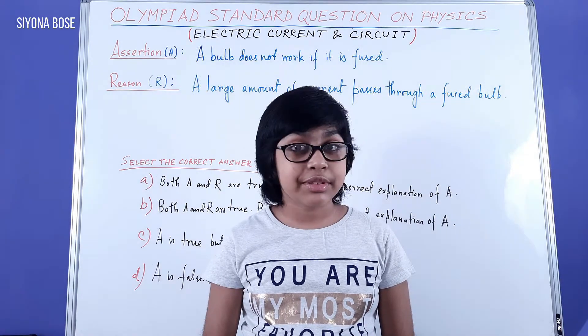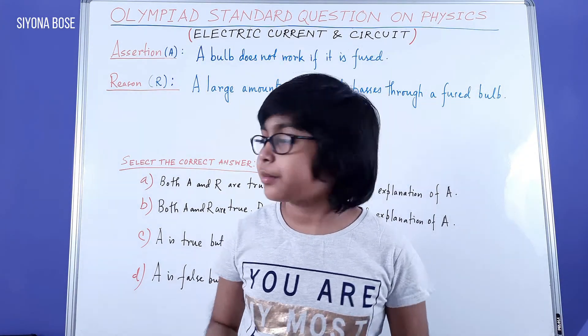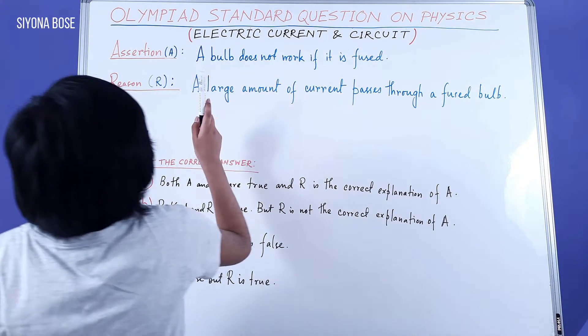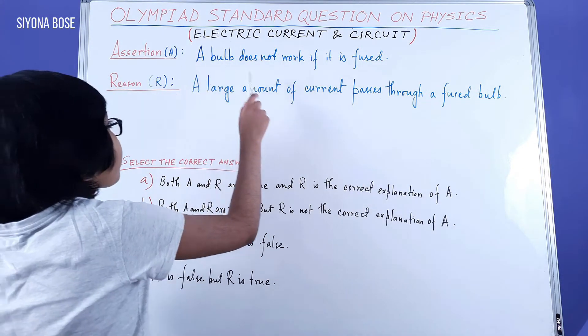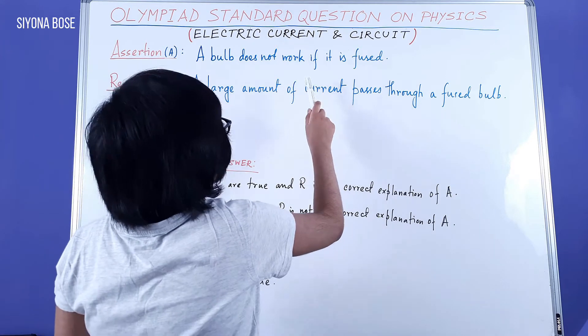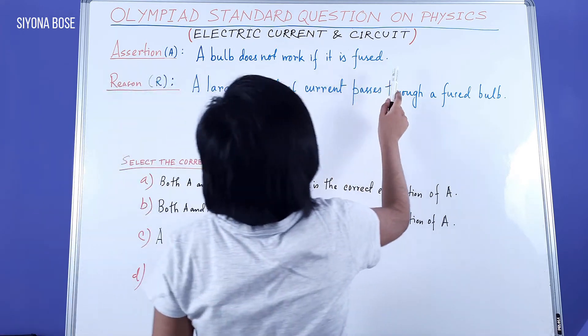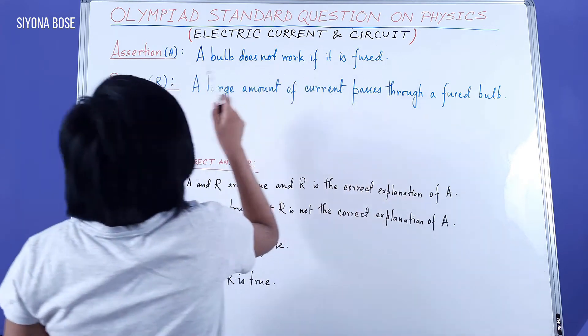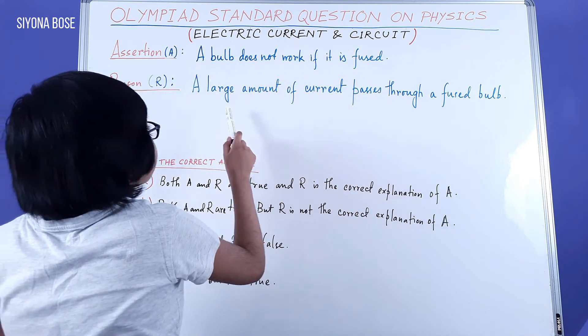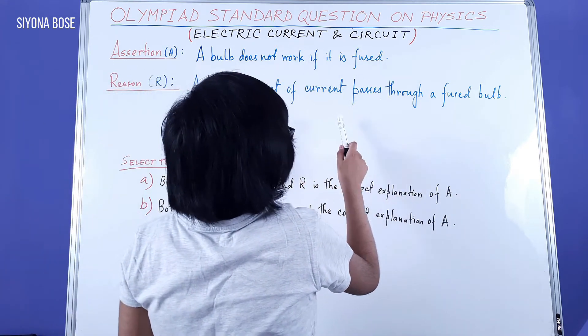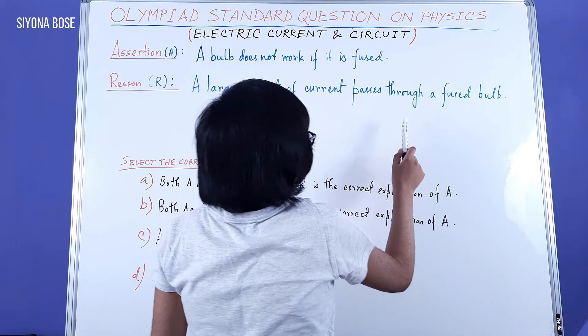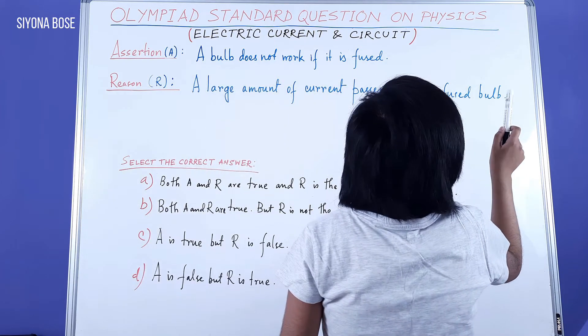So this is our second question. Assertion: A bulb does not work if it's fused. Reason: A large amount of current passes through a fused bulb.